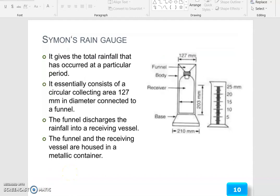Symon's rain gauge. See from here, we can measure like 5, 10, 15, 20, up to 25 mm. It is totally 203 mm. It is a receiver. It is a base. The diameter 210 mm. Through the funnel, the water will be accumulated, 127 mm. Based on the rain drop, how much in mm level we can measure. It gives the total rainfall that has occurred at a particular period. It essentially consists of a circular collecting area, 127 mm in diameter, connected to a funnel. The funnel discharges the rainfall into a receiving vessel. The funnel and the receiving vessel are housed in a metallic container.